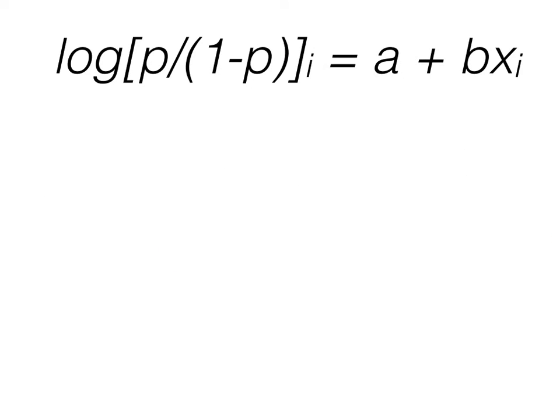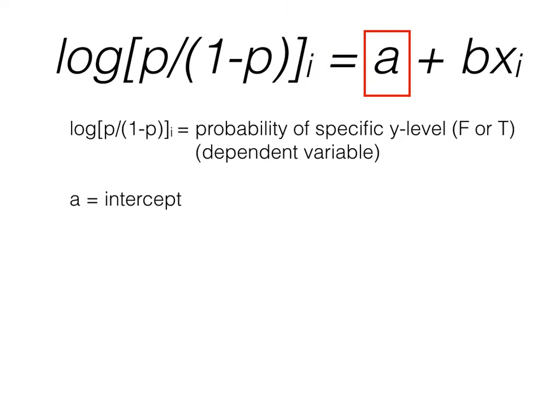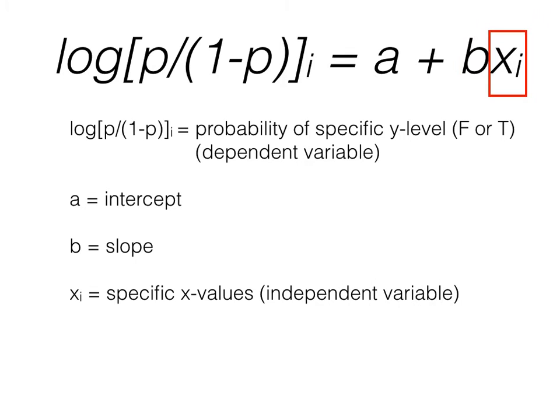Okay, now let's go through the equation piece by piece. The left side of the equation is the probability of a specific level of y, the dependent variable, in logit space. a is the intercept, b is the slope, and x is the specific x value, or independent variable. Like last time, let's try and better understand this with an example.